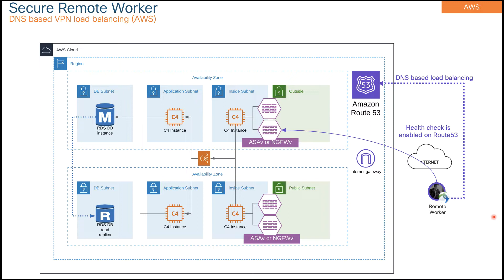I covered this design in detail in my previous video — I'm going to add a link to that video in the description. But just to give you a quick rundown: you have firewalls at the edge protecting your workloads in the cloud. You are terminating your remote access VPN — SSL VPN specifically — and you are doing load balancing of your VPN users based on Amazon Route 53 and DNS queries.